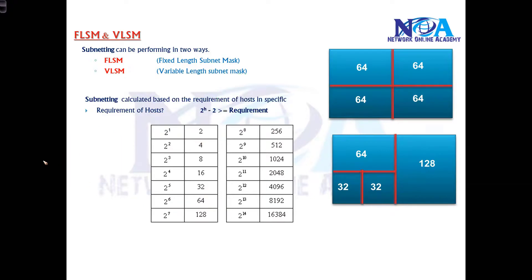Let's say if my requirement is 100 hosts—exact 100 is not possible, so the nearest possible size is 128. If you require exact 200 hosts, exact 200 is not possible. You have to go with 2 to the power of 8, that is 256.